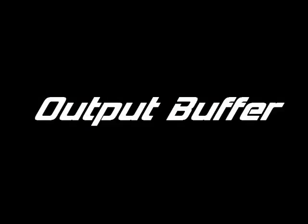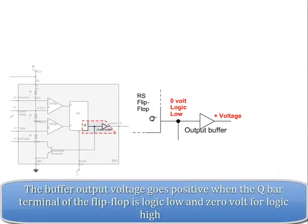Output Buffer. The buffer output voltage goes positive when the Q-bar terminal of the flip-flop is logic low, and zero volts for logic high.